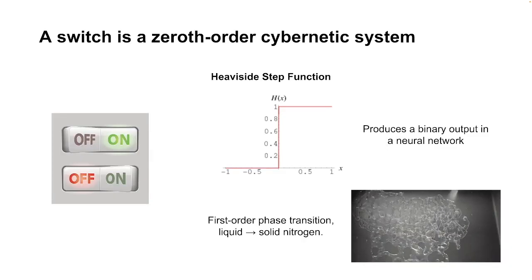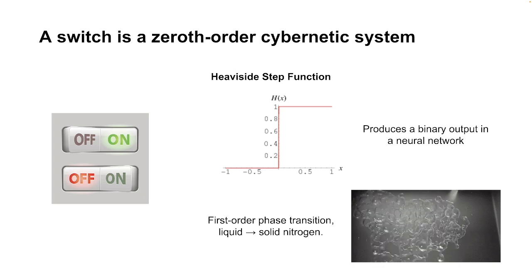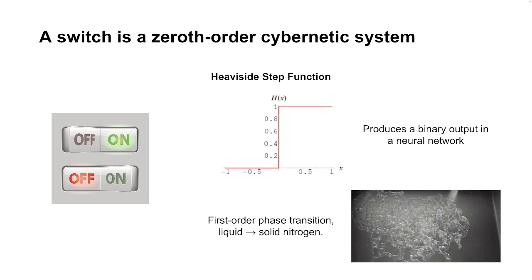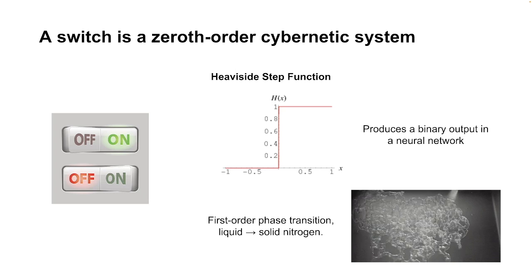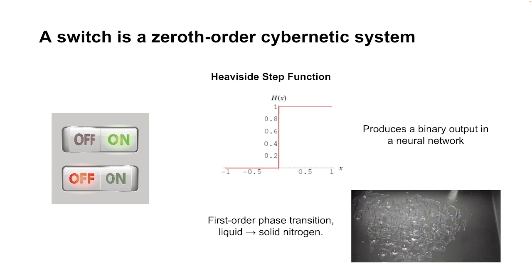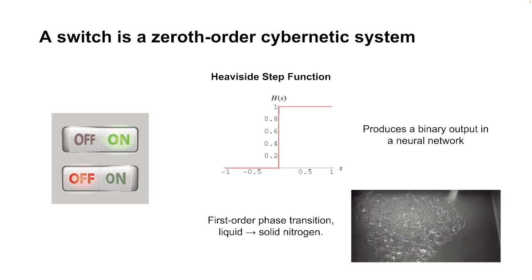From a cybernetics perspective, a switch is what we call a zeroth-order cybernetics system. We have a switch that can be turned on and off — a simple action of pushing a button. This translates to a Heaviside step function, which we often use in computation and is a very good model of the on-off switch. You go from a ground state to a state of one instantaneously. It needs no feedback — it just needs an input and gives you a straight output.